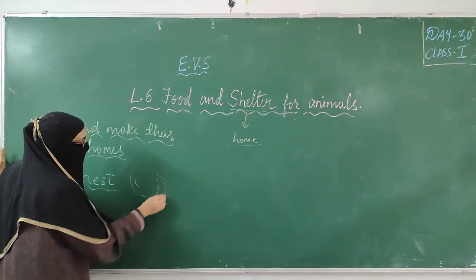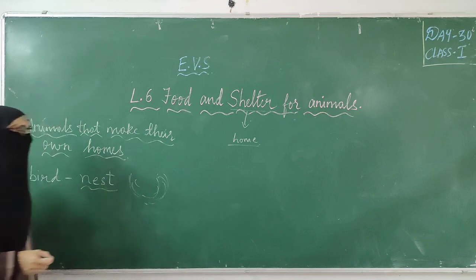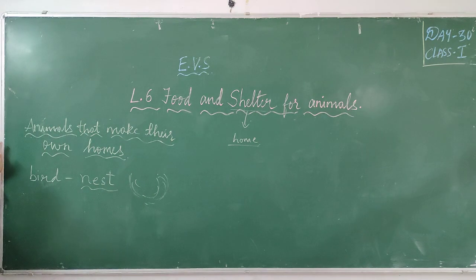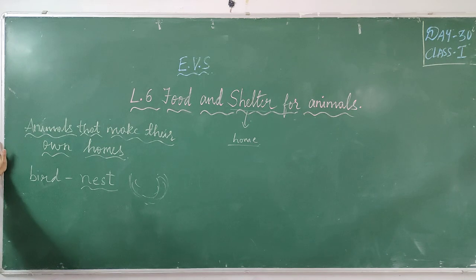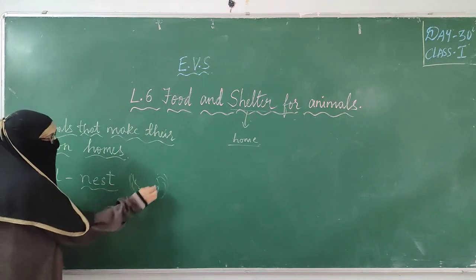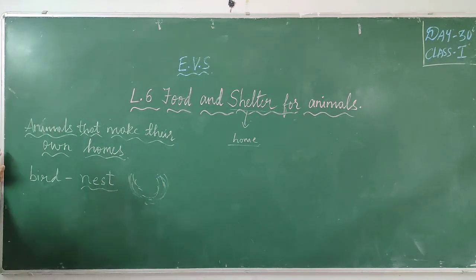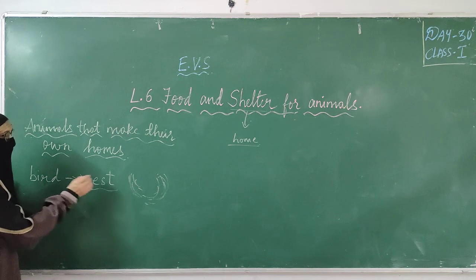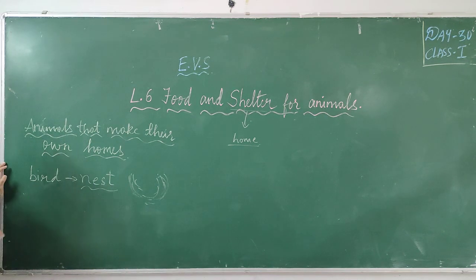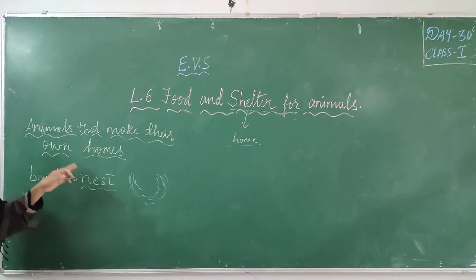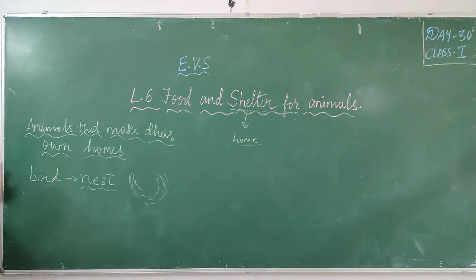A nest is made by birds themselves. They collect grass, cotton, cloth pieces, dry grass, twigs, and leaves, and with that they make a nest and live in it. So a bird's home is called a nest, and it is made by the birds themselves. Birds make their own home.